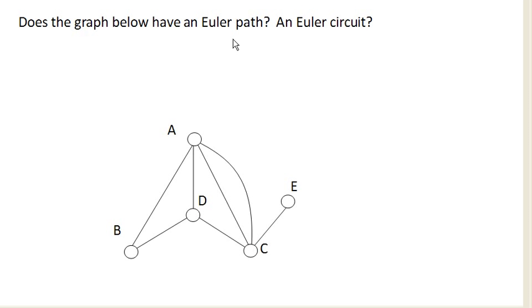It turns out that in order to have an Euler circuit, all vertices must have even degree.